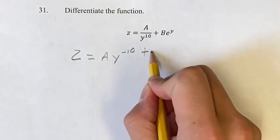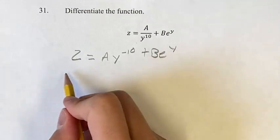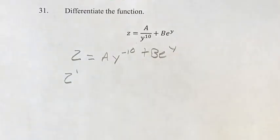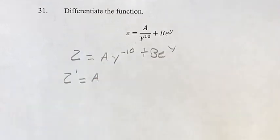We're going to leave B e to the y on its own, and now this is something we can find the derivative of. So z prime equals, with this power function, you get the coefficient out of the way first.